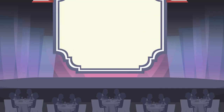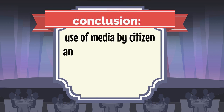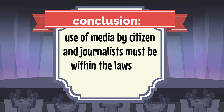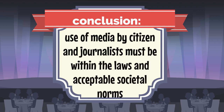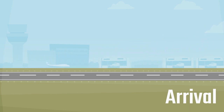To conclude, it is obvious that media regulation is justifiable. The use of media by citizens and journalists must be within the laws and acceptable societal norms. In the next module, you will learn more about existing provisions or laws set by the government to regulate the press and media use.